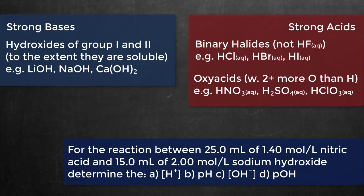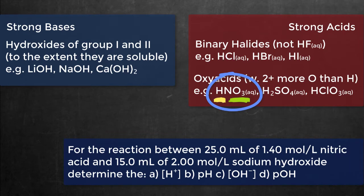For acids that contain oxygen — called oxyacids or oxo acids — if the acid has two or more oxygens than the number of acidic hydrogens, it is generally classified as a strong acid. For example, nitric acid has three oxygens and only one hydrogen, so we have two more oxygens than acidic hydrogens, and therefore this is a strong acid.